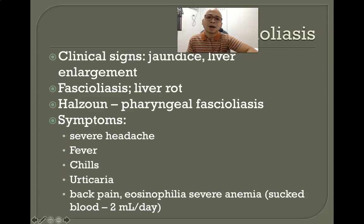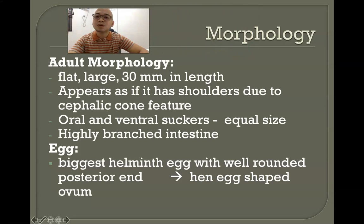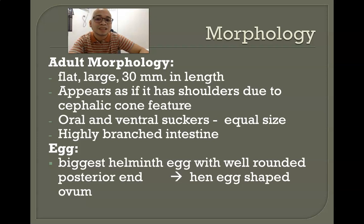These fluke worms are capable of sucking about 2 ml of blood per day, which represents an enormous loss for the host. Regarding morphology, the adult is considered a large worm, covering about 30 millimeters in length.